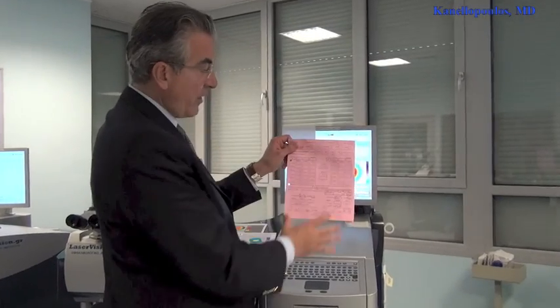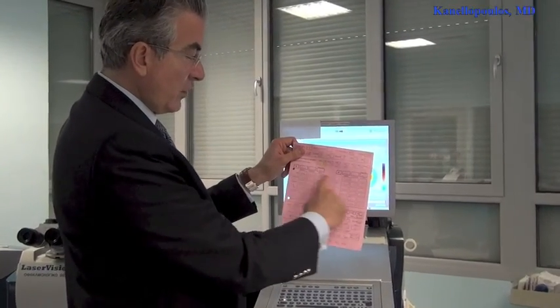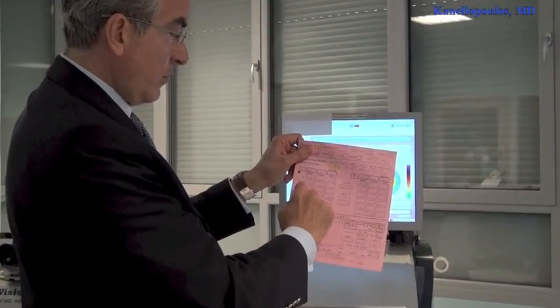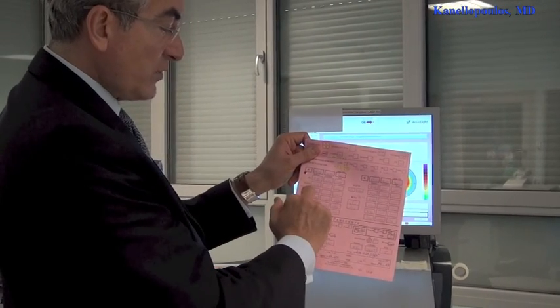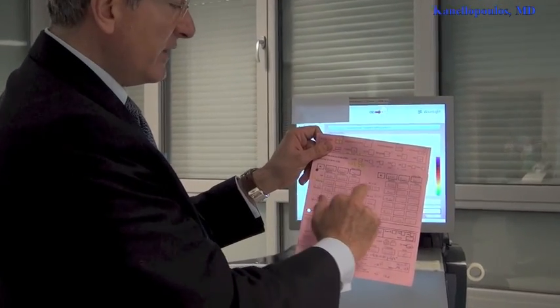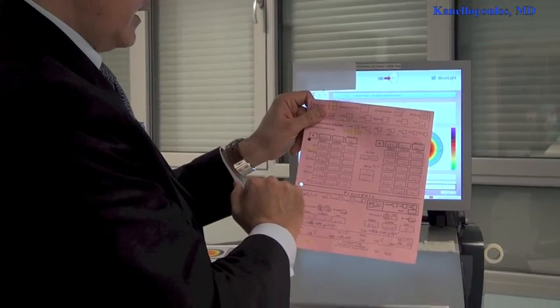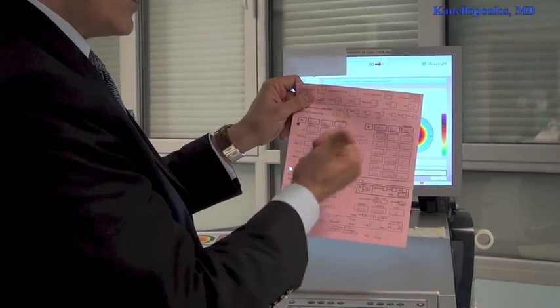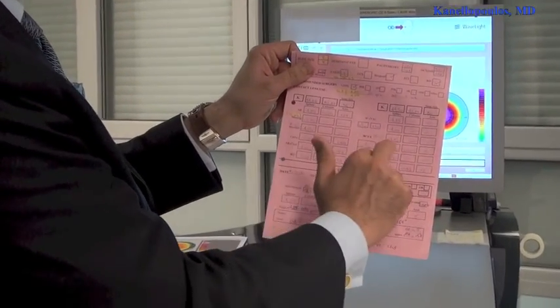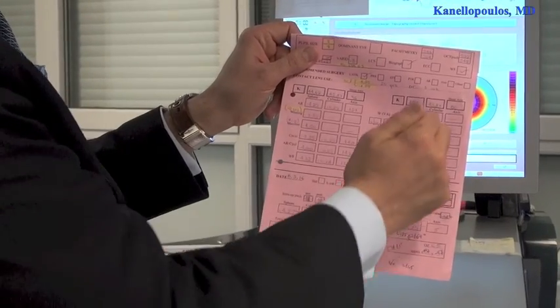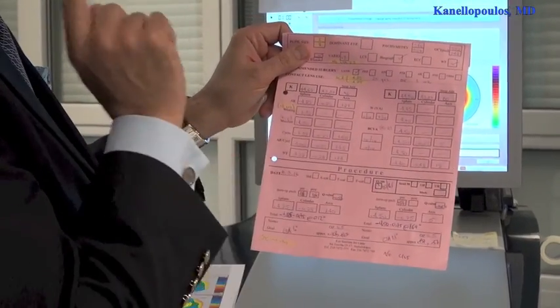And these are the refractions we try first and see what the patient is wearing. The patient is wearing minus 3.75 and minus 4. The manifest refraction, the dry refraction, minus 4 and a half, minus 4 and a half. Please note, nowhere here is the patient choosing astigmatism.